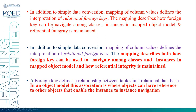The mapping describes how a foreign key can be navigated among the classes and instances in a mapped object model, and how reference integrity is maintained. A foreign key defines the relationship between tables in the relational database. In the object model, this association is where an object can have a reference to another object, enabling instance-to-instance navigation.